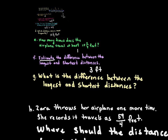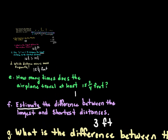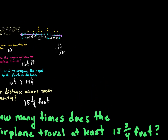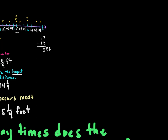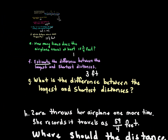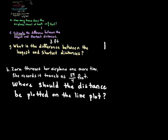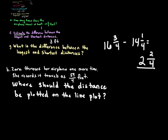What is the actual difference between the longest and the shortest distance? Now they want the exact number, not an estimate. So we calculate 16 and three-fourths minus 14 and one-fourth, and we get two and two-fourths. That is the actual difference between the longest and the shortest distances.